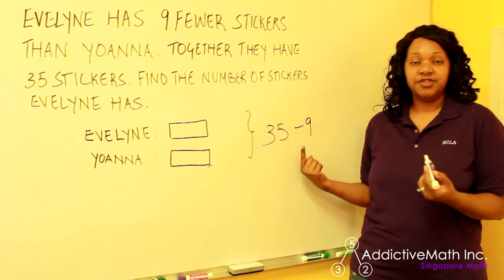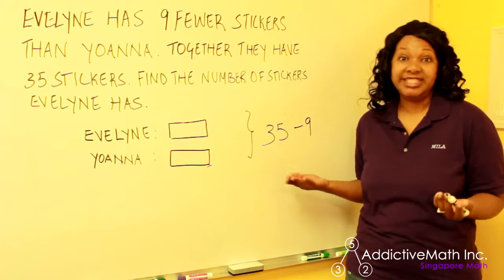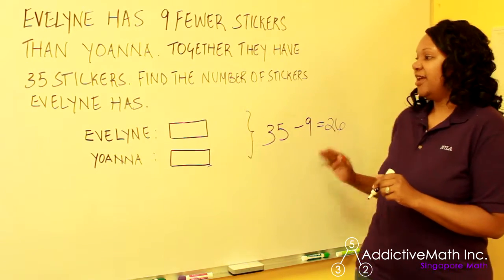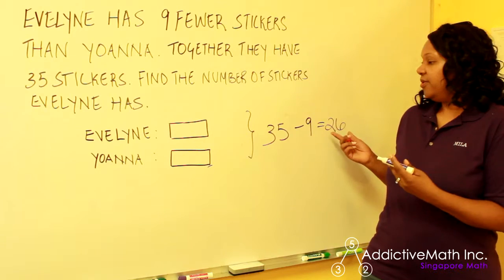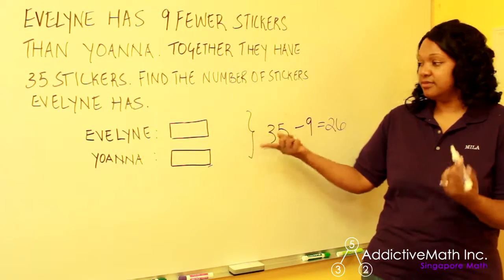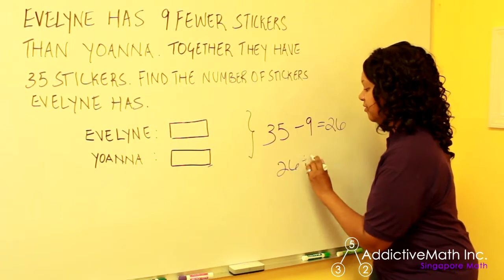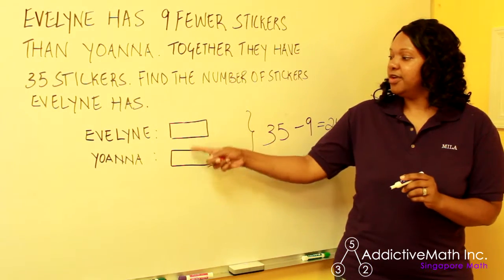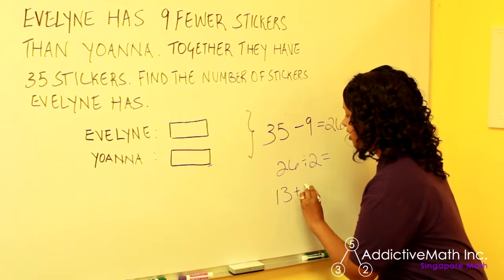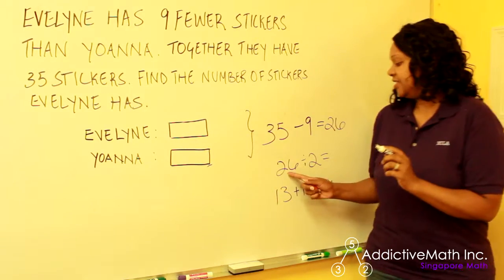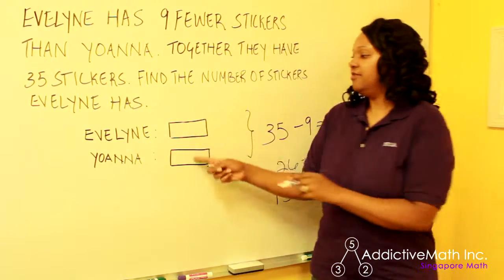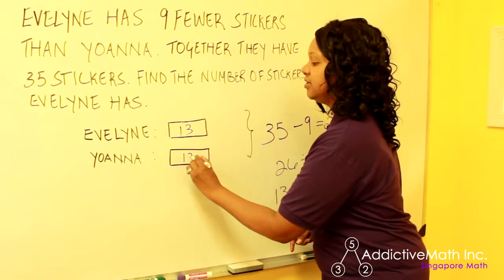So 35 minus five gives you 30, minus another four would give you 26. So 35 minus nine is 26. Now we have 26 here and we have two equal bars. We can divide 26 by our two bars to get it. Or for our younger viewers, what are two equal numbers that will give us 26? 13 plus 13 would give you 26. 26 divided by two gives us 13. So we know now that both of these bars are 13 and 13.